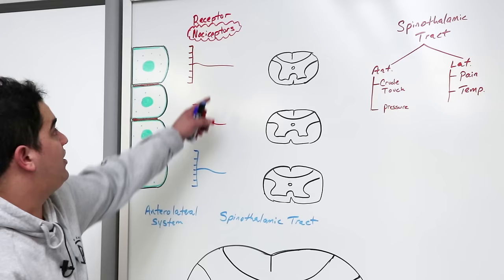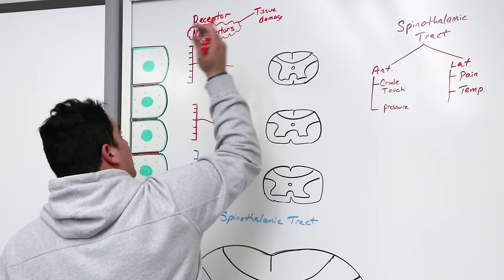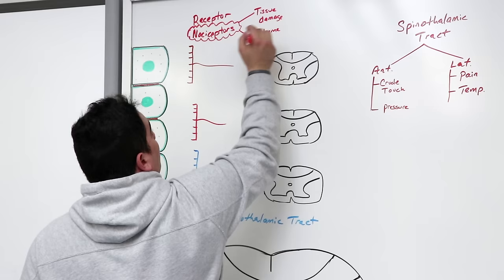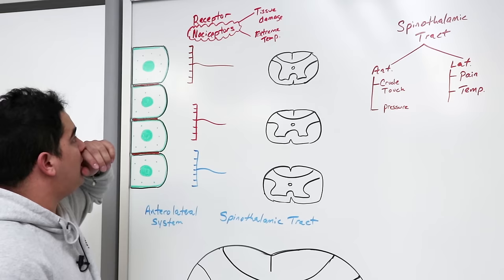Nociceptors pick up two different types of stimuli: tissue damage — which could be from chemical burns or mechanical injury like slamming your finger — and extreme temperatures, like extreme cold or hot water. So these receptors respond to tissue damage and extreme temperatures.